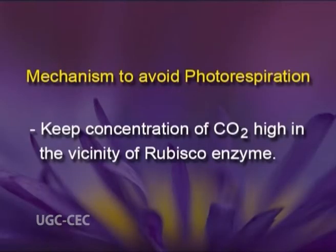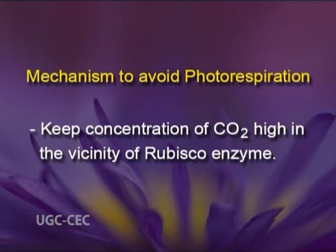C4 and CAM plants try to keep the concentration of carbon dioxide high in the vicinity of the rubisco enzyme — in other words, they try to concentrate carbon dioxide near rubisco so that its carboxylation activity is favored.